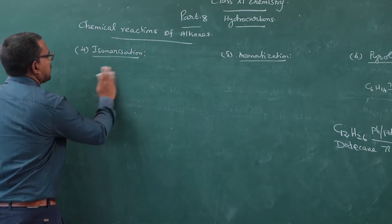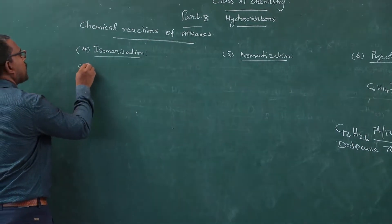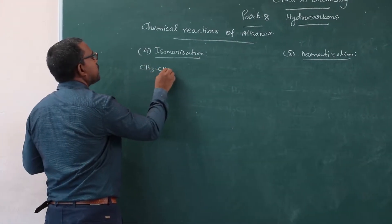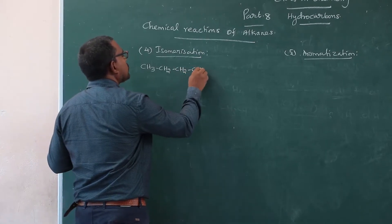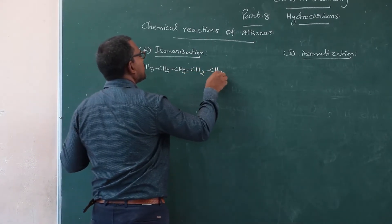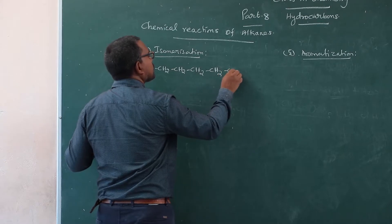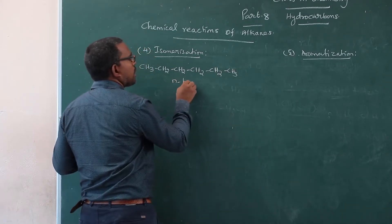Normal hexane. Formula for normal hexane, CH3-CH2-CH2-CH2-CH2-CH3. This is normal hexane.